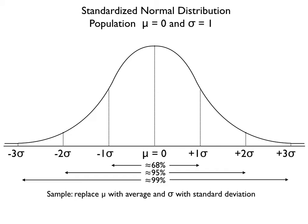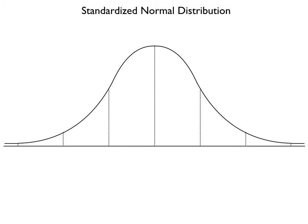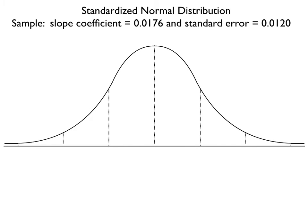When we do the slope coefficient analysis, we use standard error — it is the standard deviation in a slope coefficient analysis. Looking at our data set, we estimate the slope coefficient was 0.0176 and the standard error was 0.012. If we plot this on our normal distribution curve, we begin with the mean of 0.0176 and then add standard errors to both sides of that distribution.